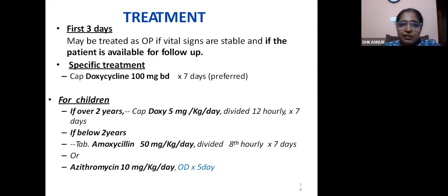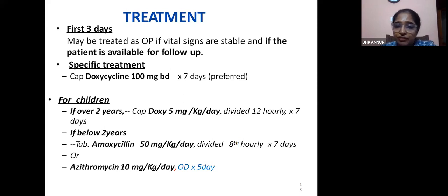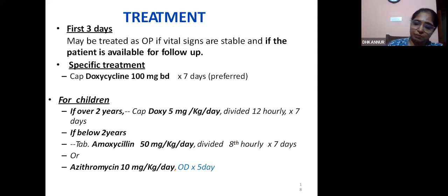Treatment: the first 3 days may be treated as outpatient if vital signs are stable and the patient is available for follow-up. Specific treatment is doxycycline 100 mg BD for 7 days. For children over 2 years: doxycycline 5 mg/kg/day divided BD for 7 days. Below 2 years: amoxicillin 50 mg/kg/day divided 8-hourly, or azithromycin 10 mg/kg/day for 5 days.